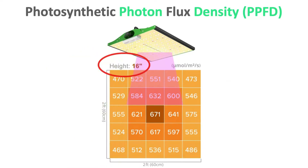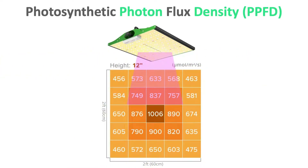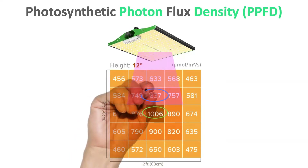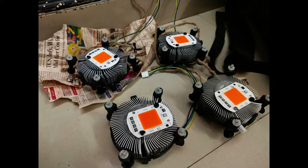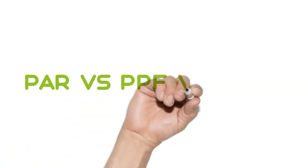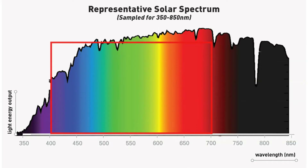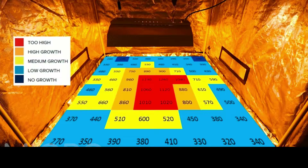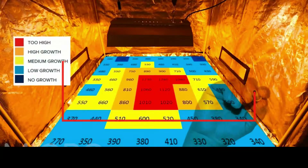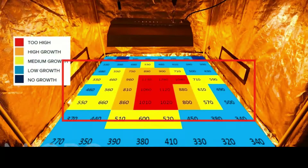The most important thing to note is that light is more intense in the center and keeps decreasing as we move outwards — we have a solution for this, so watch till the end of the video. To summarize: PAR is the light most used by plants, PPF is the amount of light emitted by the lighting source, and PPFD is the amount of photons that hit one square meter.